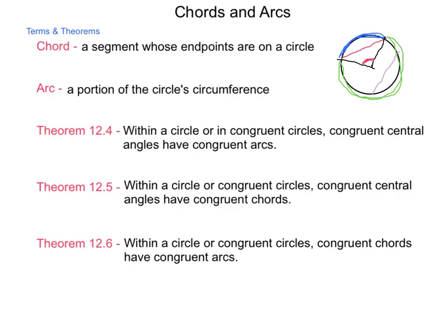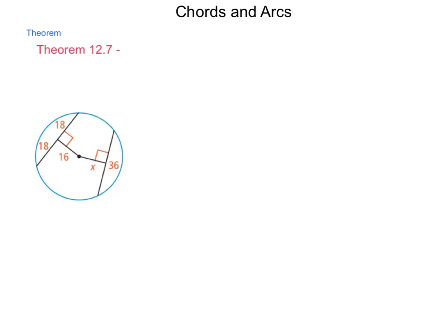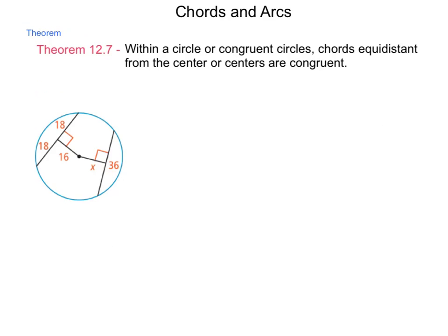This will leave us just one more theorem before we start looking at some problems associated with them. Theorem 12.7 tells us, within a circle or congruent circles, chords equidistant from the center or centers are congruent.